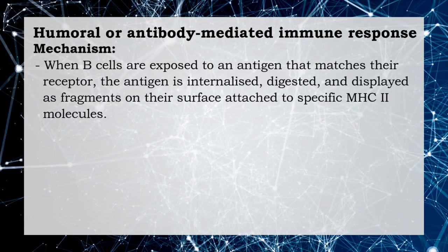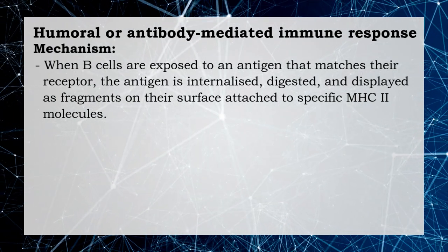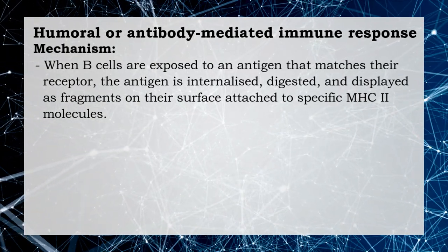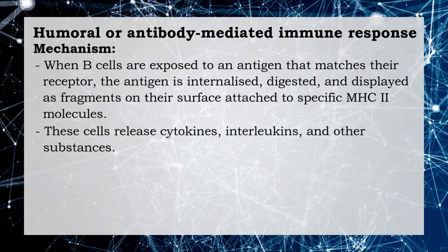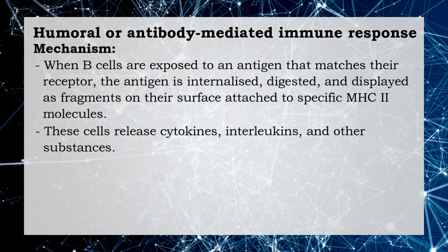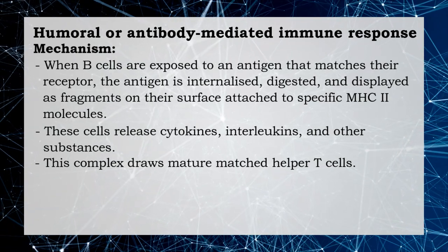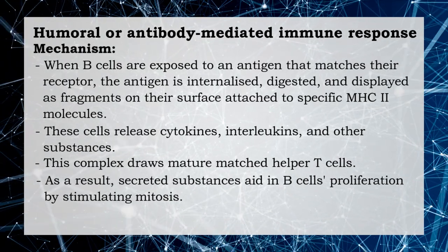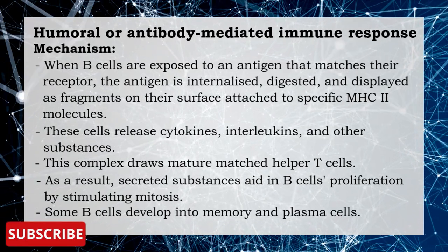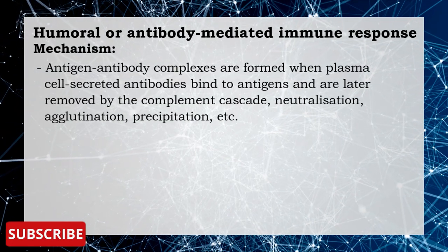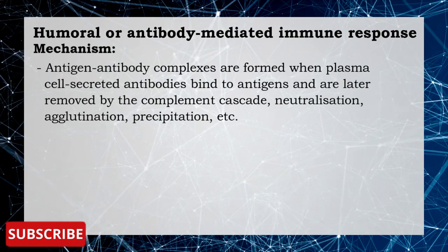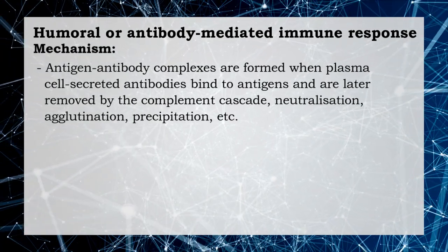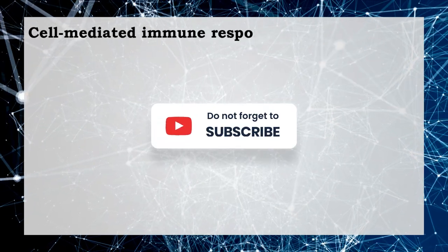In the mechanism of antibody-mediated immune response: when B cells are exposed to an antigen matching their receptor, the antigen is internalized, digested, and displayed as fragments on the surface attached to specific MHC2 molecules. These cells release cytokines, interleukins, and other substances. This complex draws mature matched helper T cells; as a result, secreted substances aid in B cell proliferation by stimulating mitosis. Some B cells develop into memory and plasma cells. Antigen-antibody complexes are formed when plasma cell-secreted antibodies bind to antigens, and are later removed by complement cascade, neutralization, agglutination, precipitation, etc.